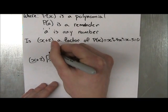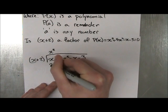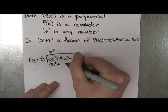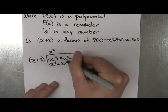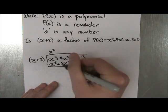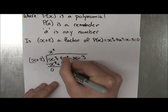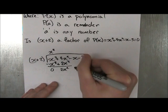So what times x equals x cubed? That's x squared. So you get x cubed plus 2x squared, subtract these two, you get 0, 2x squared, drop the next term.